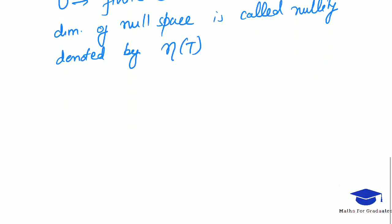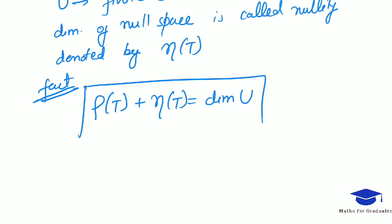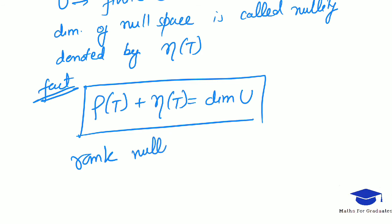And now there is a fact related to this: rank of T plus nullity of T equals the dimension of U. This is called the Rank-Nullity Theorem.